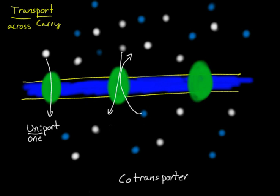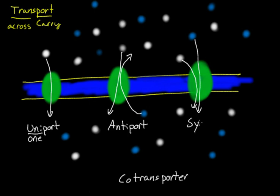Where this one will grab a white one and a blue one, and they will both be carried across the membrane together — and this is a symporter. With an antiporter, you're carrying two things from opposite sides across at the same time: the white one's going from the top to the bottom, and the blue one's going from the bottom to the top.